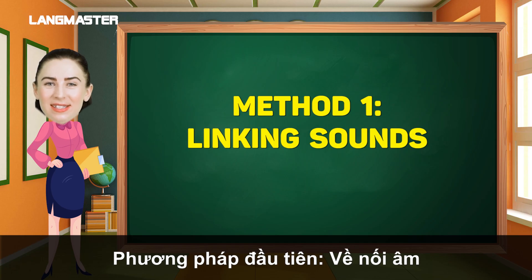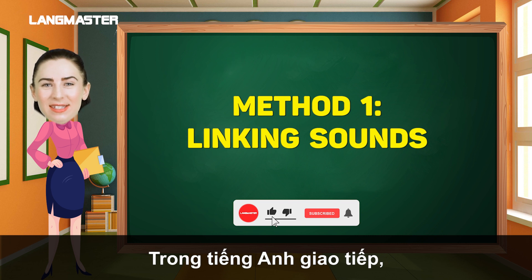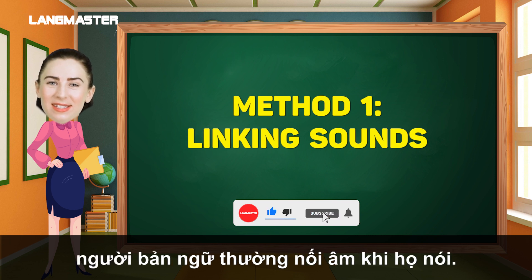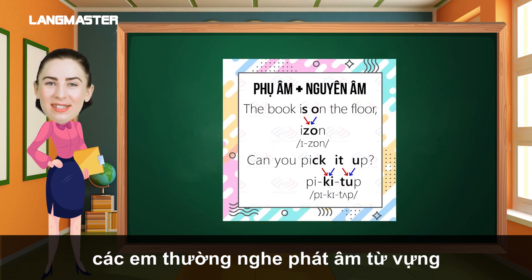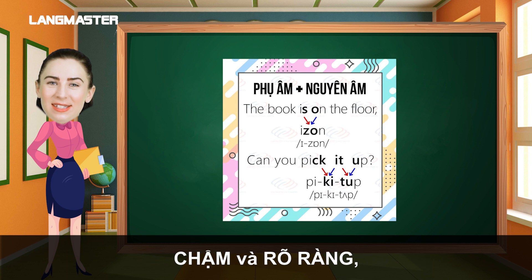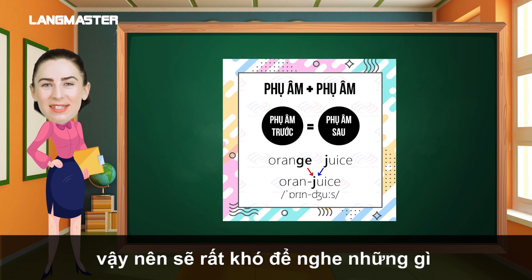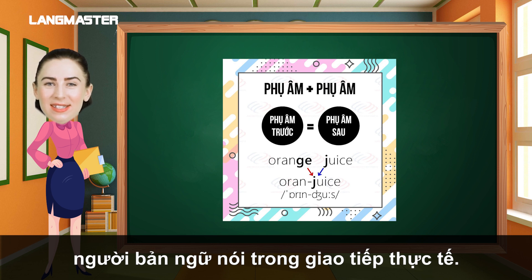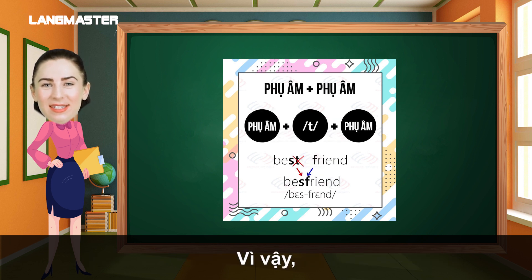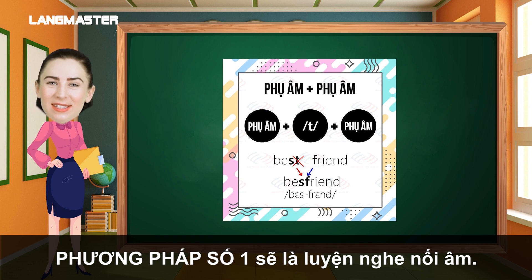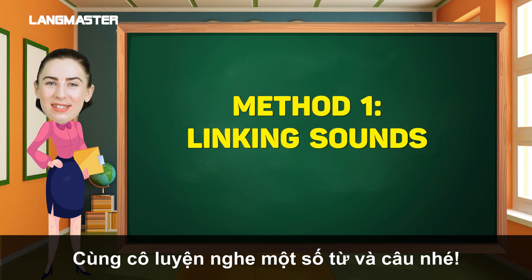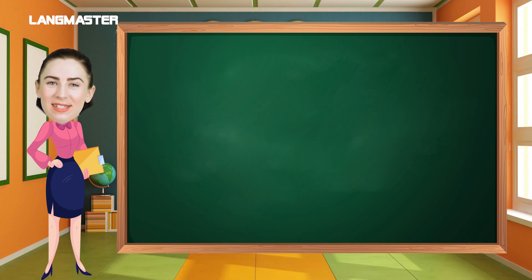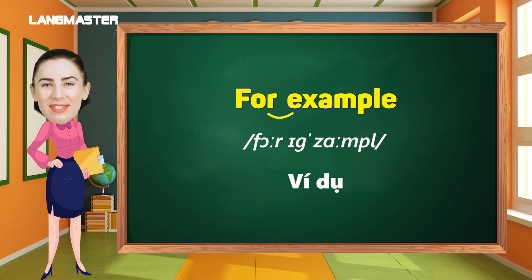Method 1: Linking Sounds. In spoken English, native speakers often link words when they speak. But normally, you guys often hear the pronunciation of words slowly and clearly, so it's quite challenging to hear what they actually say in real conversation. Therefore, method number 1 is to practice listening to linking sounds. Let's practice hearing some words and sentences with me. For example: